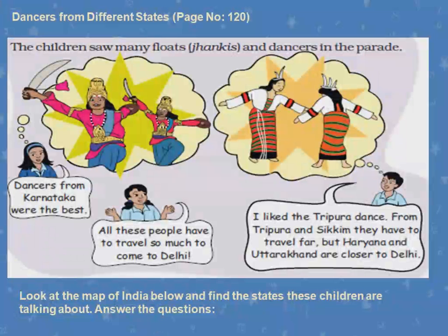Dancers from Different States, page number 120. The children saw many floats and dancers in the parade — that is, they saw many dancers from different states of India. One child said the dancers from Karnataka are the best, while another said all these people have to travel so much to come to Delhi. This is because the Republic Day Parade is celebrated in Delhi. One child said 'I like the Tripura dance' — from Tripura and Sikkim they have to travel far, but Haryana and Uttarakhand are closer to Delhi.